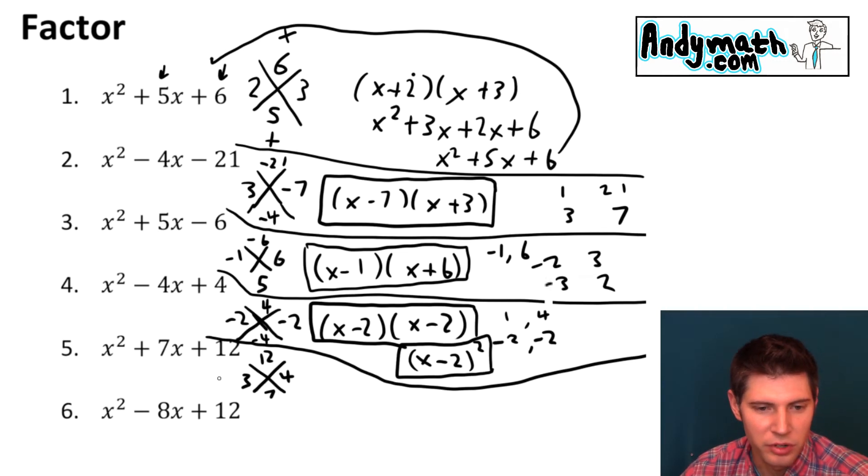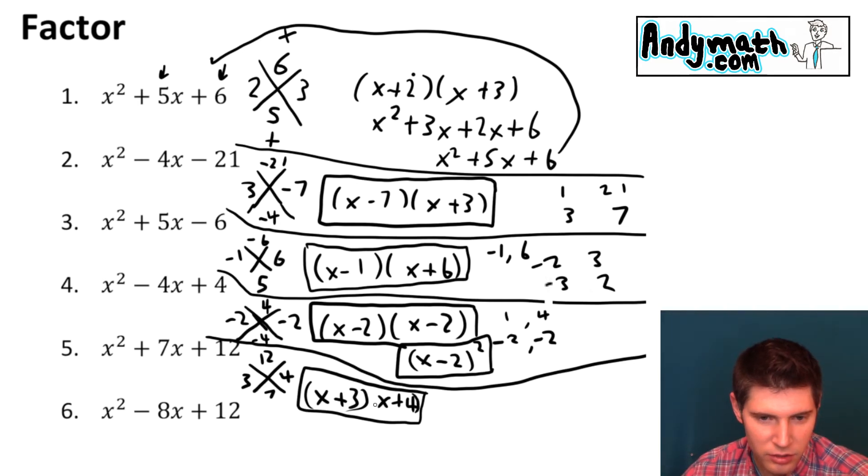So 3 times 4 is 12. 3 plus 4 is 7. So it's going to be x plus 3, x plus 4. And that is the answer to that one.